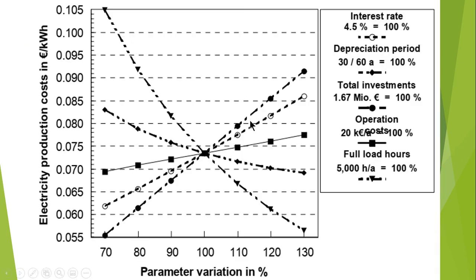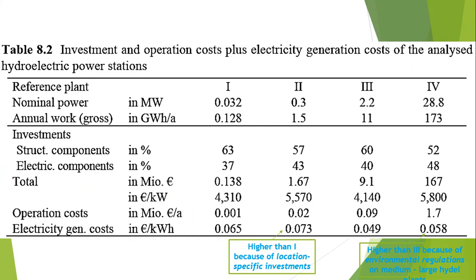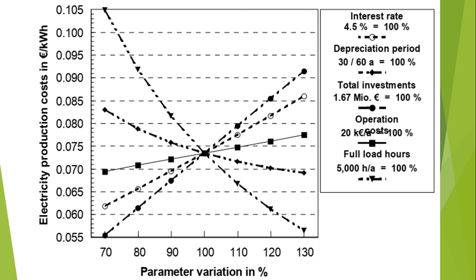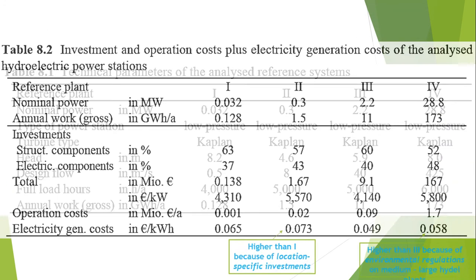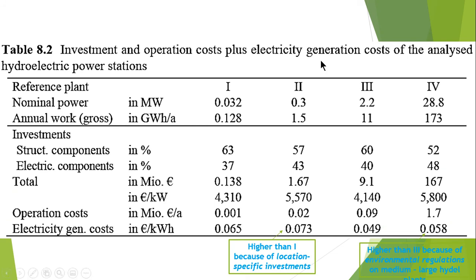So this is the analysis of effects of varying parameters on plant number 2. Let us first discuss about the sensitivity analysis. The electrical generation costs are influenced by a number of different parameters. In order to show their influence, the main parameters have been discussed using an example of a newly constructed run-of-river station with an installed power of 300 kilowatt — that was plant number 2 from tables 8.1 and 8.2.